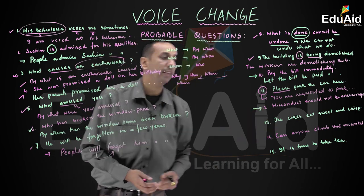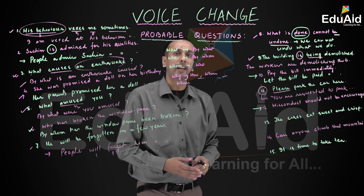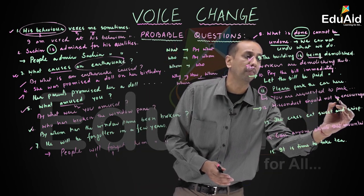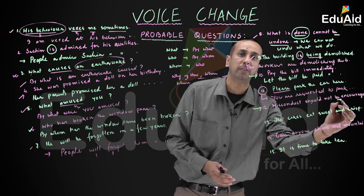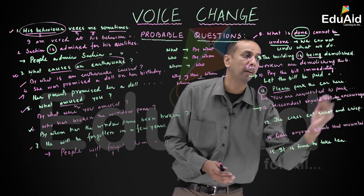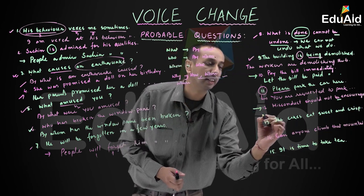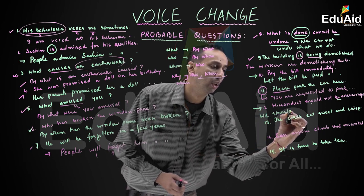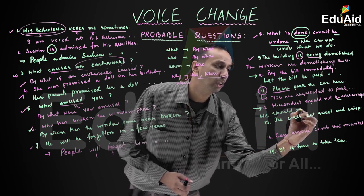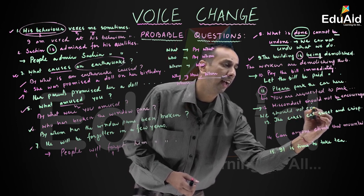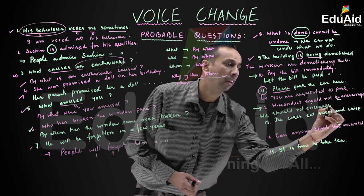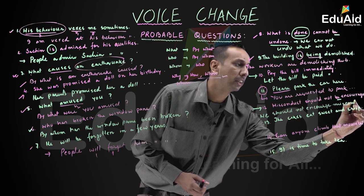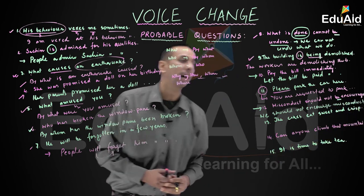Question number twelve: 'Misconduct should not be encouraged.' 'Should' is a modal auxiliary verb, and the sentence is already in passive form. Converting to active: 'We should not encourage misconduct.'